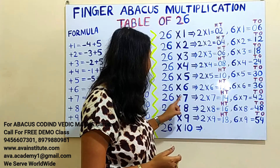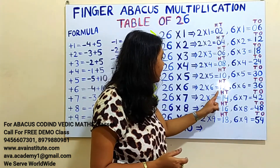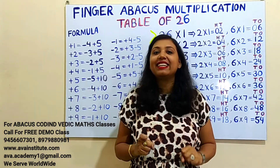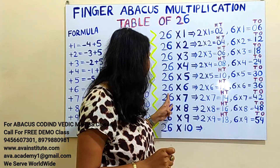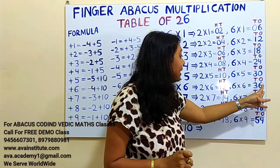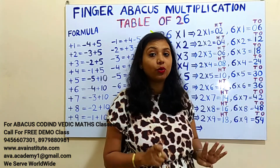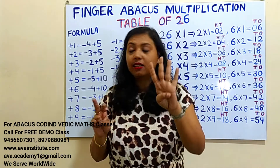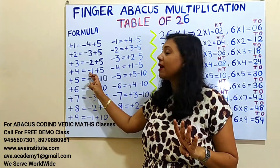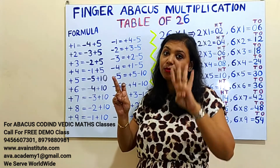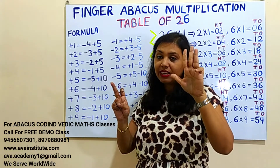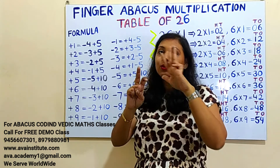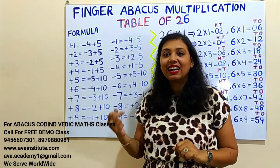26 sevens are: 2 sevens are 14 — in hundreds 1, in tens 4. Now 6 sevens are 42 — in tens we add 40, in ones we add 2. We can add 2 easily. How to add 40? The plus 4 formula is minus 1 plus 5, so plus 40 formula is minus 10 plus 50. So the answer: hundreds 1, tens 50, 60, 70, 80 — 80, ones 1, 2. The answer is 182.